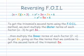To get the trinomial's second term using the FOIL method, we next multiply the outer terms of each factor, x times 3, to get 3x. Then multiply the inner terms of each factor, 2 times x, to get 2x, giving us the like terms that we combine to get the second term of the trinomial, 5x.